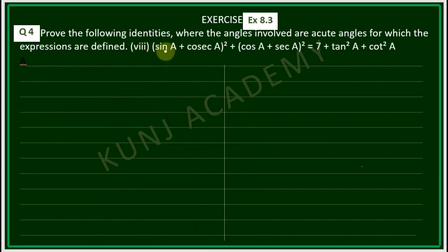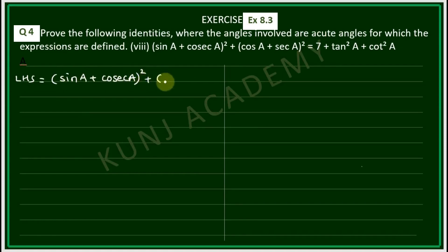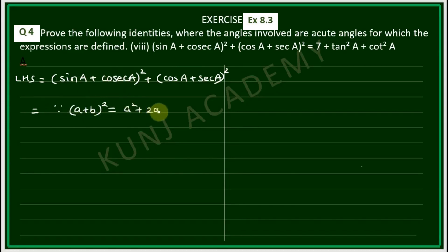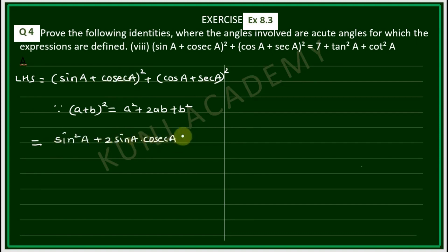Number 8: (sinA + cosecA)² + (cosA + secA)² is equal to 7 + tan²A + cot²A. Left hand side. Applying the identity (A + B)² = A² + 2AB + B²: sin²A + 2sinA·cosecA + cosec²A plus cos²A + 2cosA·secA + sec²A.